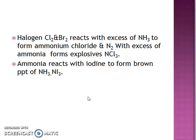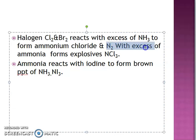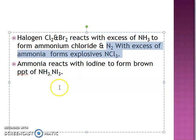Next, NH3 reacts with halogens like Cl2 and Br2 to form ammonium chloride. An important reaction: NH3 reacting with Cl2 forms NCl3 which is explosive. Nitrogen has many such explosive compounds. With iodine, NH3 gives a brown precipitate. Questions on this are not very frequent.